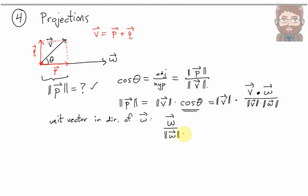So the unit vector in that direction, well, I know W. W divided by its length is a unit vector. So I'm going to put it all together to get a formula for the vector P.